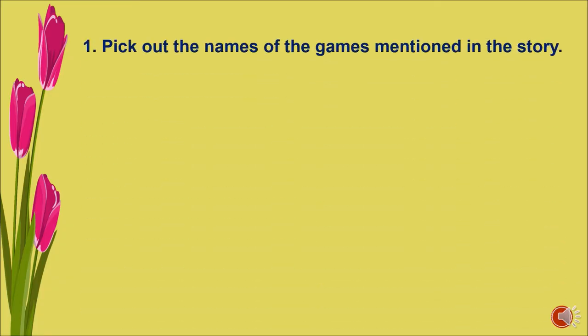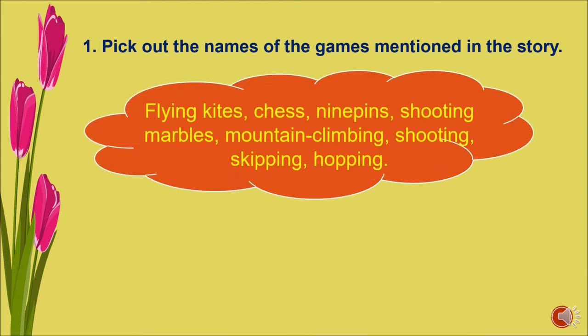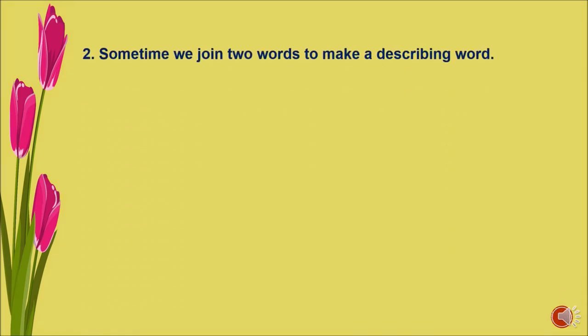Next section: creative writing. Question one — pick out the names of the games mentioned in the story. The answer is: flying kites — yes; chase — no; nine pins — yes; shooting marbles — yes; mountain climbing — yes.